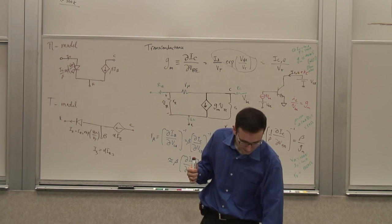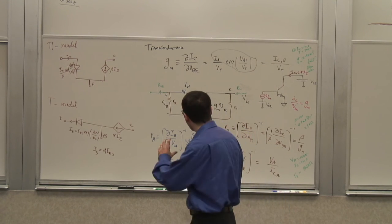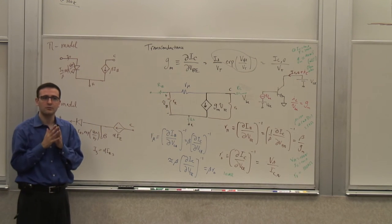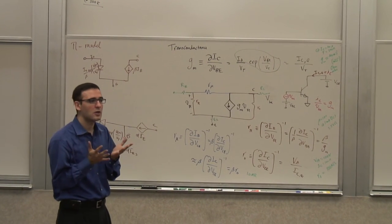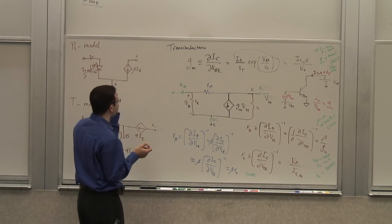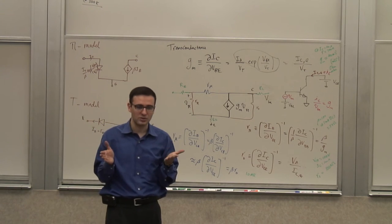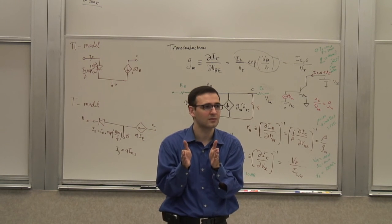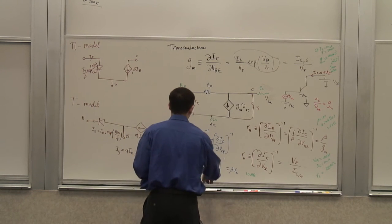Everything we've talked about so far has been low-frequency static effects. In addition to these, you also have some other things in the transistor. First, you have junctions — two depletion regions: one between the base and emitter, and one between the base and collector. We have demonstrated that these have capacitance.